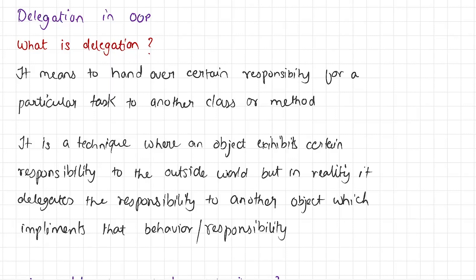Long story short, delegation is a technique in which an object exhibits certain responsibility to the outside world, but in reality it does not implement that responsibility. Rather, it delegates that responsibility to another object that actually implements that behavior or responsibility. If this definition is not clear to you, do not worry — I will explain delegation with a very simple example. Let's head over to the IDE where I will show you delegation in action.